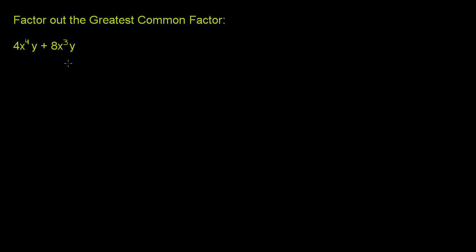To find that greatest common factor — and I always put it in quotes when we speak in algebraic terms — because we don't really know what x and y are, whether they're positive or negative, or whether they're greater than or less than 1. So it's not always going to be the greatest absolute number, but it contains the most terms of these two monomials.